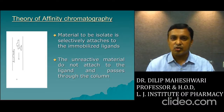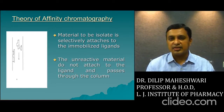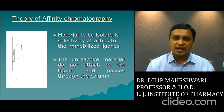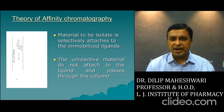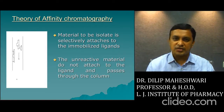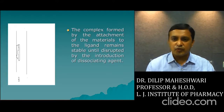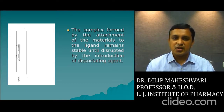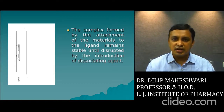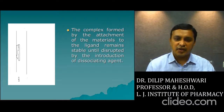The immobilized ligand is nothing but your stationary phase. Unreactive material does not attach to the ligand and passes through the column. This stationary phase has a very specific targeted group available in its structure, so it can attract and attach directly to your compound which you want to isolate, while the remaining impurities are drained out through the column. The complex formed by the ligand remains stable until disrupted by the introduction of dissociating agents.